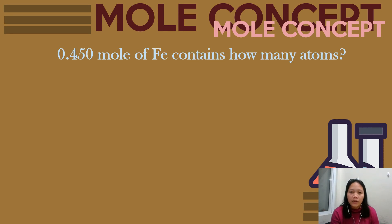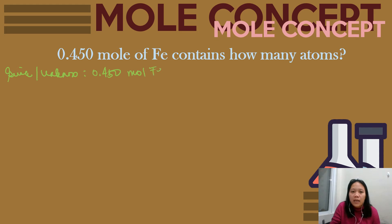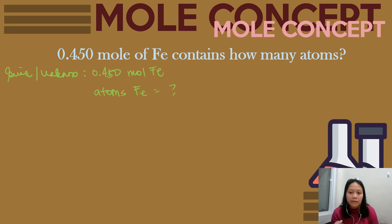The third problem: you are given 0.450 moles of iron and asked how many atoms are there. Identify the given — 0.450 moles of iron — and the unknown — the number of atoms. In the mole concept, we handle grams to moles, moles to grams, moles to atoms, moles to ions, and moles to molecules.